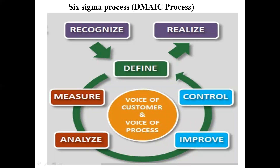The 16th question: discuss briefly about the Six Sigma process. The Six Sigma process follows the DMAIC methodology: Define, Measure, Analyze, Improve, and Control. The voice of the customer and voice of the process are at the middle level. The drawing shows the stages of Six Sigma as Define, Measure, Analyze, Improve, and Control.